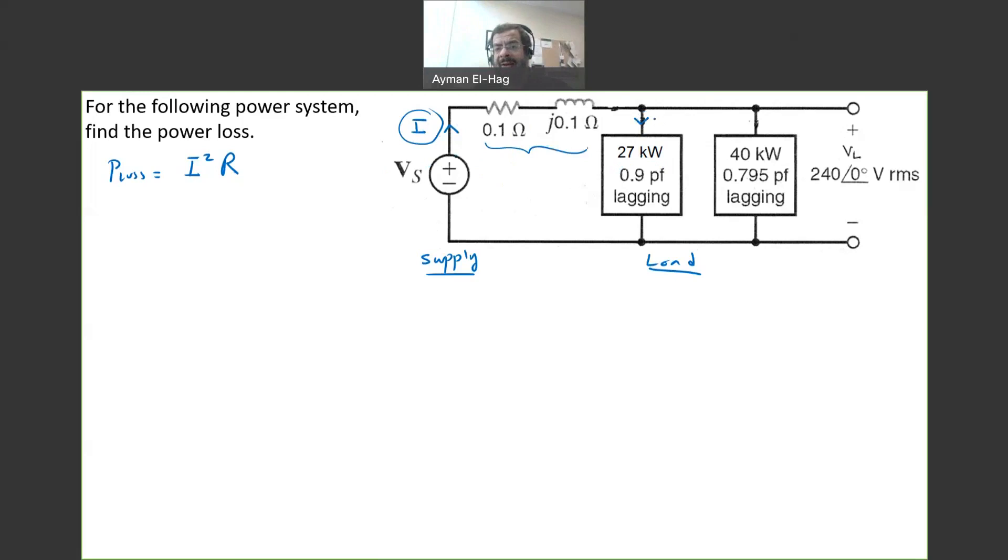We are giving information about each load. This load will have IL1, and this load will have IL2. So, basically, applying simple KCL, your I that you want to find is basically nothing but IL1 plus IL2. Now your question becomes how to find IL1 and IL2.